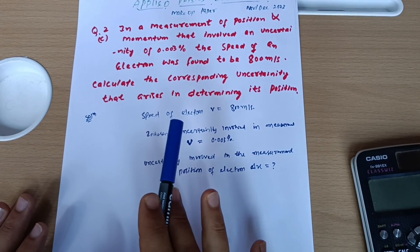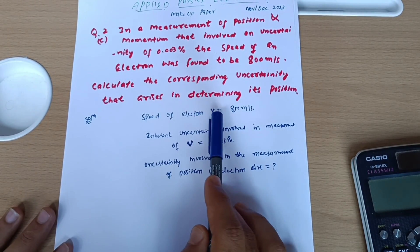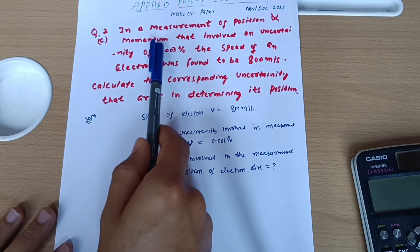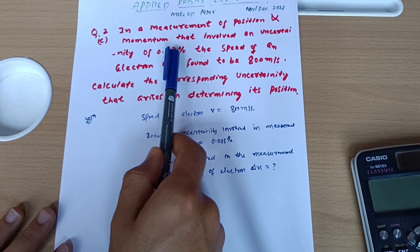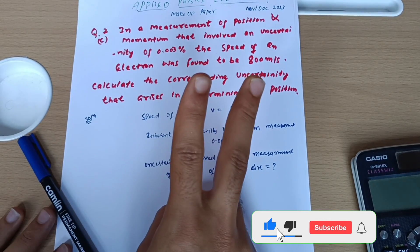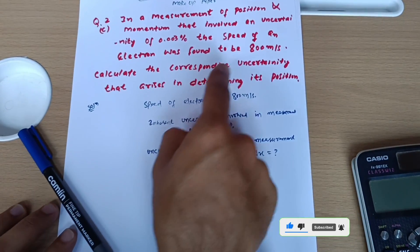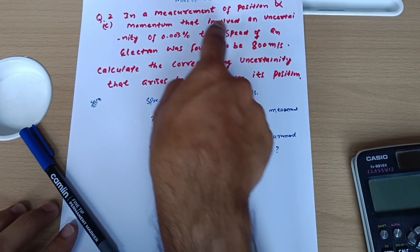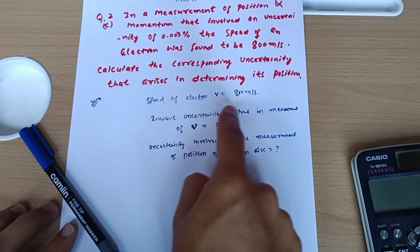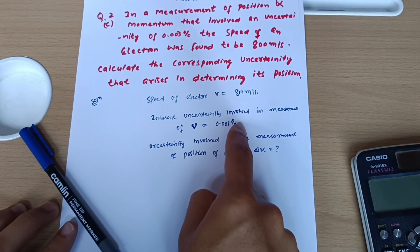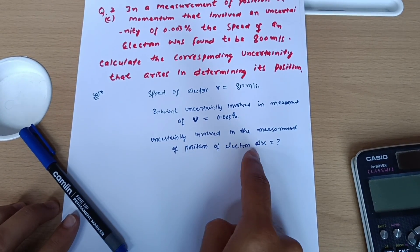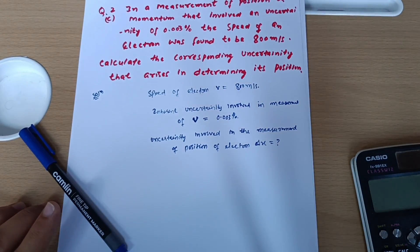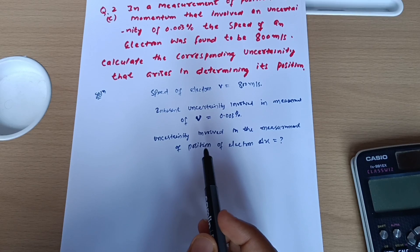While writing down the solution, first try to write down the given data. Speed of electron v is equal to 800 meters per second. The momentum involved an uncertainty of 0.003 percent. You should recognize which uncertainty it is — as per Heisenberg there are two uncertainties: one for momentum and one for position. The question asks to calculate the uncertainty in position, so this 0.003 percent is the uncertainty in momentum. The uncertainty in position, delta x, is what we have to calculate.